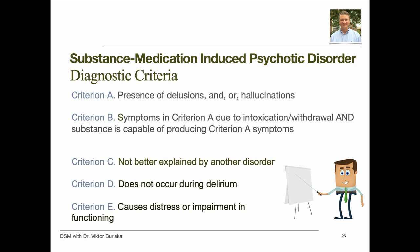For the diagnostic criteria for substance or medication-induced psychotic disorder, Criterion A requires the presence of delusions and/or hallucinations. Criterion B requires evidence from history, physical examination, or laboratory findings that the symptoms developed during or soon after substance intoxication or withdrawal or after exposure to a medication, and that the involved substance is capable of producing those symptoms. Criterion C states the disturbance is not better explained by a non-substance-induced psychotic disorder — some people will have symptoms prior to substance use, others will continue having symptoms long after withdrawal, and clinicians can check whether the client has a history of recurrent non-substance-related episodes. Criterion D states the disturbance does not occur exclusively during delirium. Criterion E requires the disturbance to cause clinically significant distress or impairment in social, occupational, or other important areas of functioning.